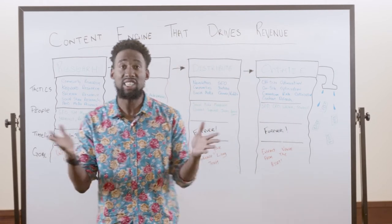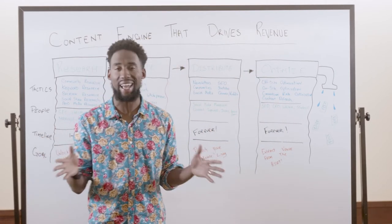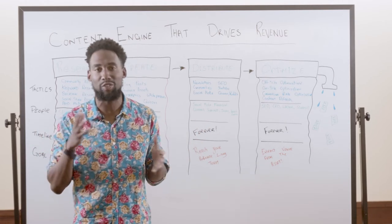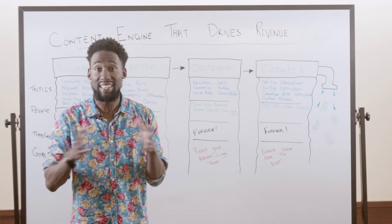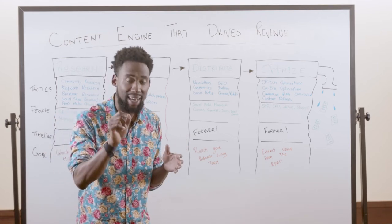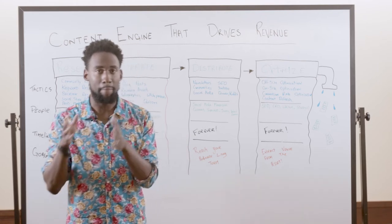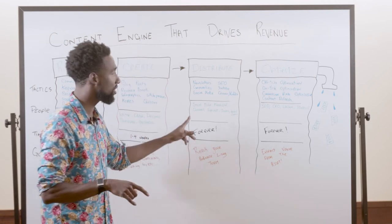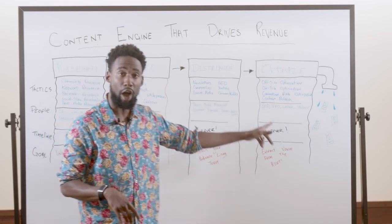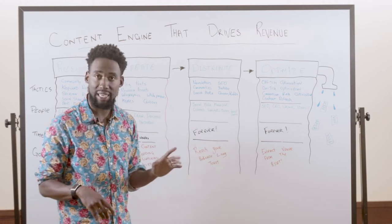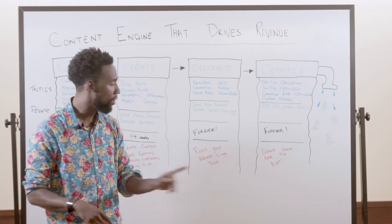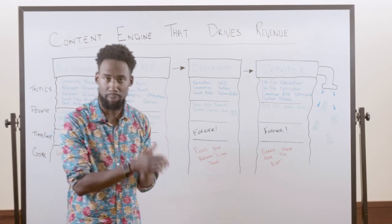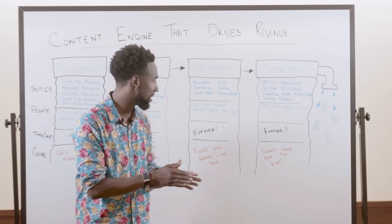Research and create — that's typically where most brands end. They create their content and say they're successful. But they forgot about content marketing — you actually have to market the content you're producing. How do you do that? Distribution and optimization. These are two things you have to do forever. Create once, distribute forever. Create once, optimize forever.